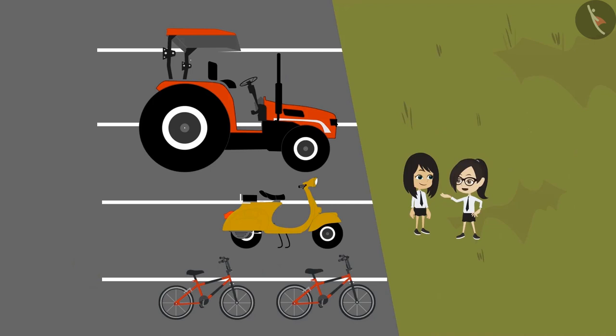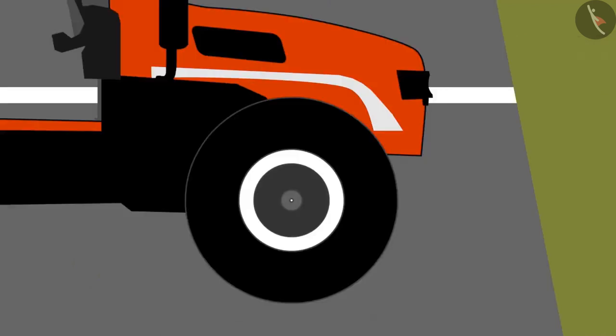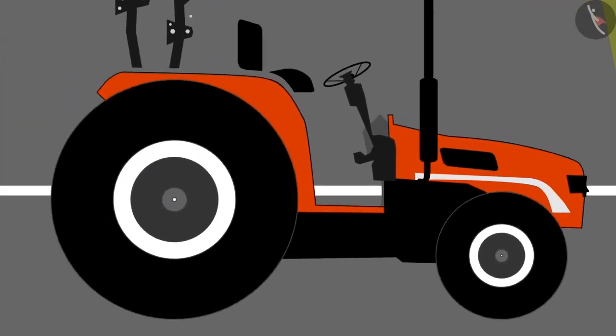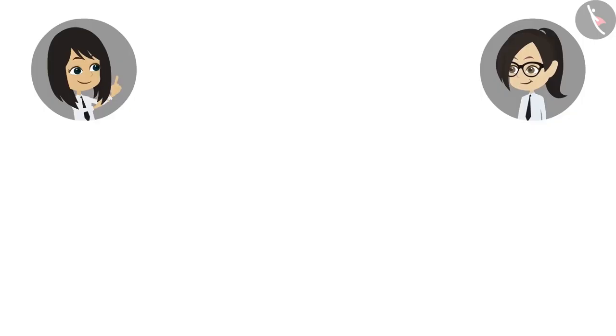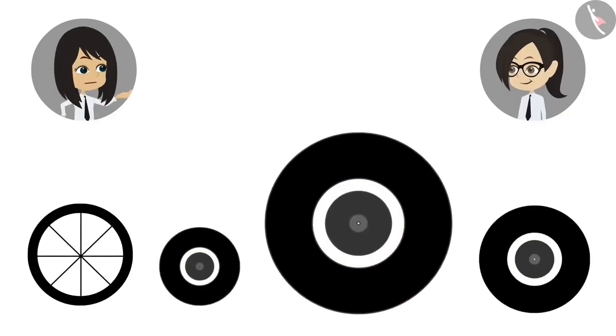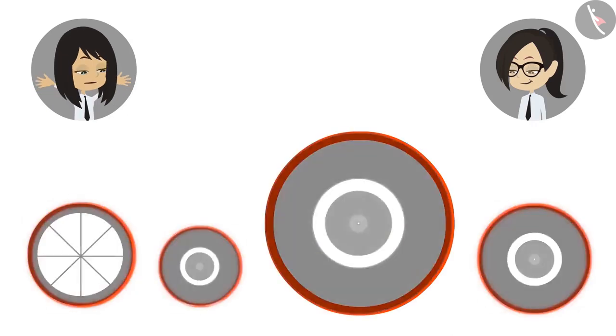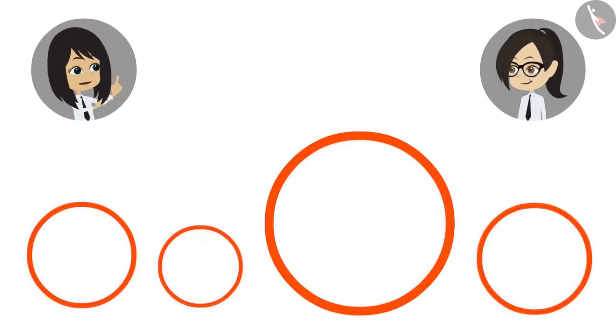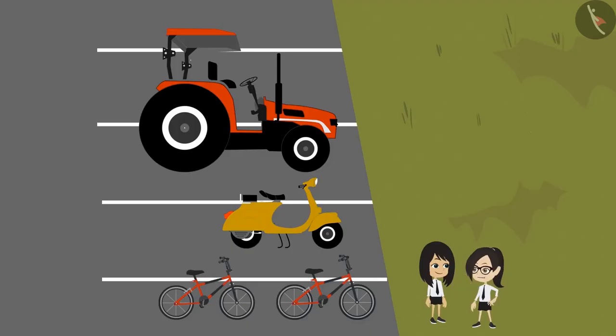But the tractor also has two types of tires and the front tire is smaller than the tire at the rear. You noticed one thing? We saw four different sizes of tires. But all are in the shape of a circle. Yes, you are right Neha. All are circular.